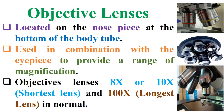The objective lenses are located on the nose piece at the bottom of the body tube, and are used in combination with the eyepiece to provide a range of magnification. Objective lenses 8x or 10x take the shortest lens, and 100x takes the longest lens in normal use.